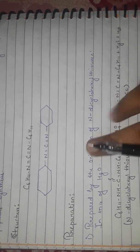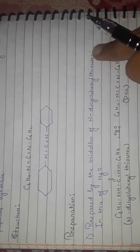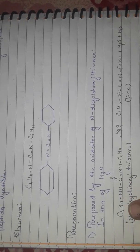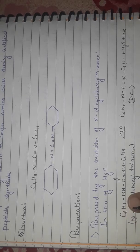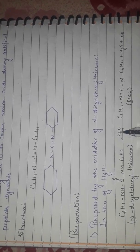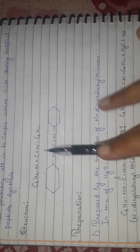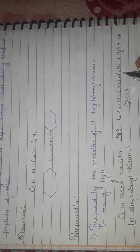N,N'-dicyclohexyl thiourea (C6H11-NH-C(=S)-NH-C6H11) in the presence of mercuric oxide (HgO) will give DCC directly (C6H11-N=C=N-C6H11). This is the first preparation for DCC.